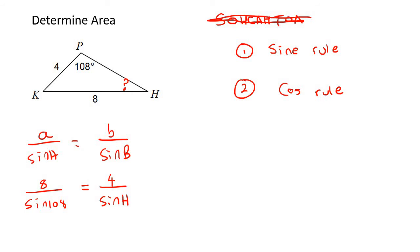And then I can make that equal to 4 over the sin of H. Now I would use cross multiplication. So I would multiply this up here and I would multiply this up here. And so we would end up with 8 sin H equals to 4 sin 108.